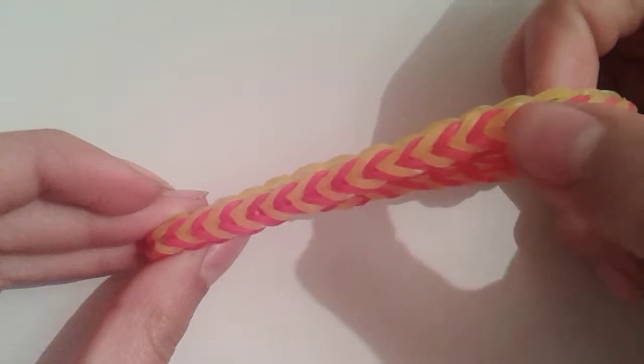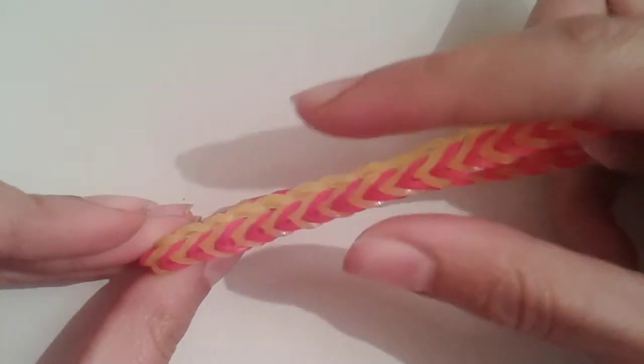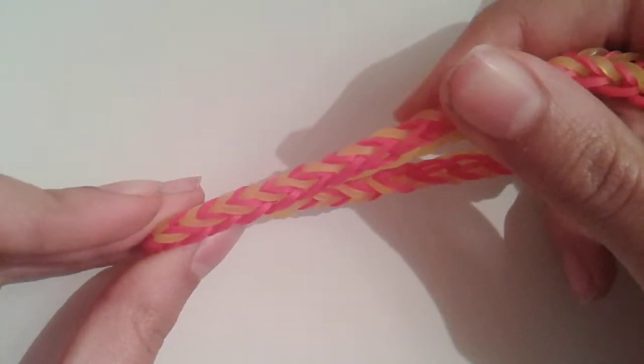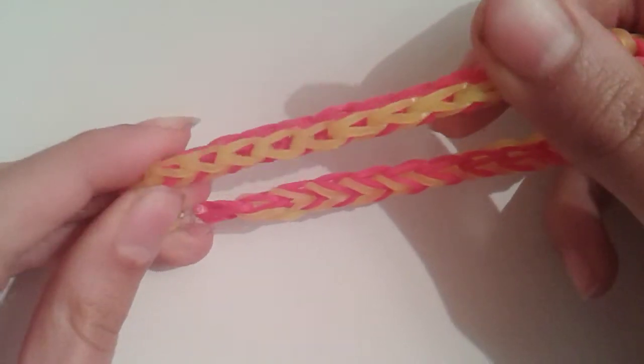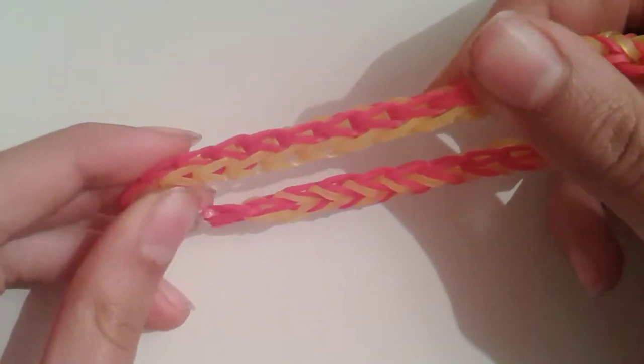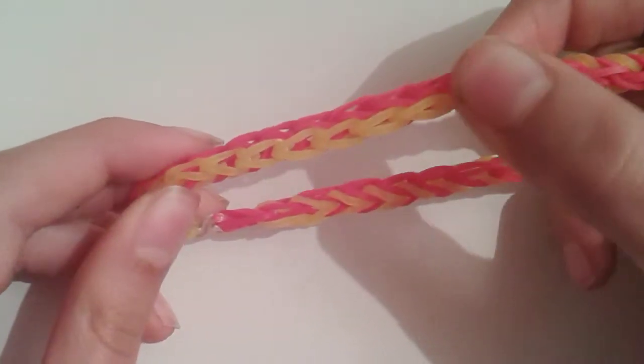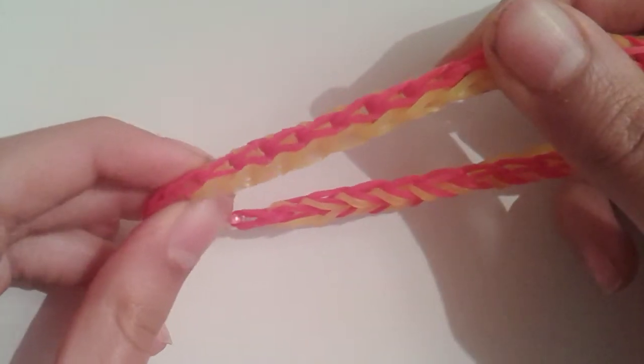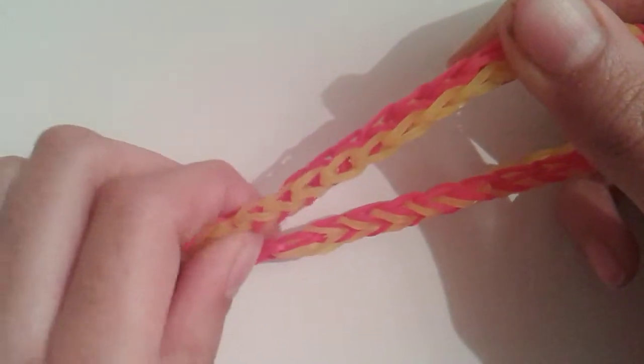Over here is the fishtail with one border that's yellow and then the other border is red. And over here there's two single chains - one of them is yellow, the other one is red. This is really not time consuming or rubber band consuming.